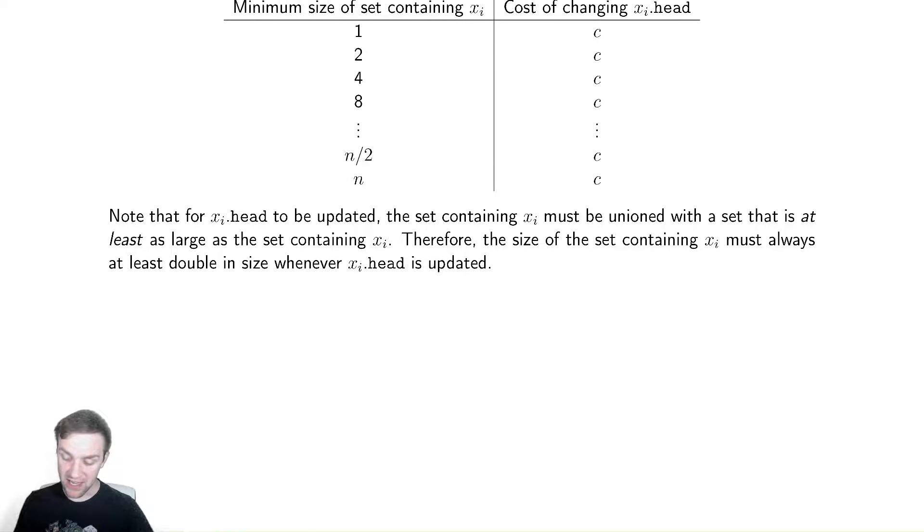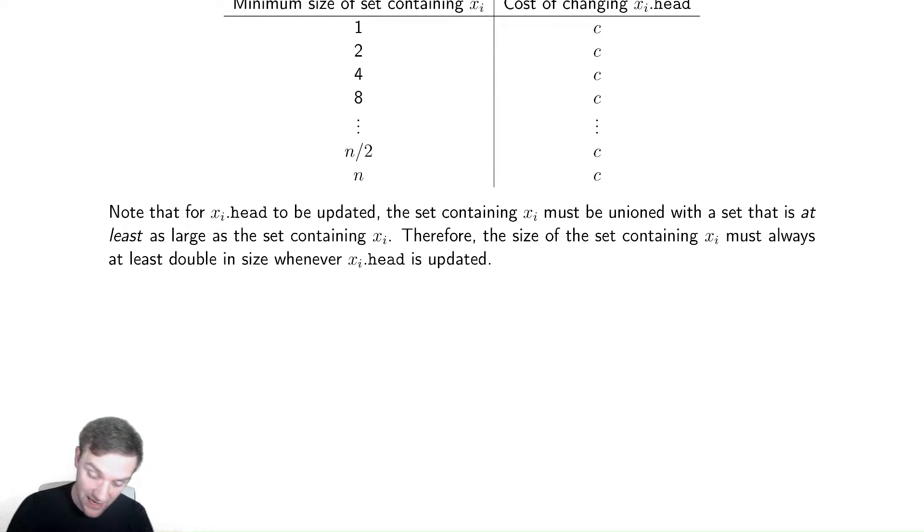Let's analyze the life cycle of xi. Suppose it starts as small as possible. The smallest xi could be is by itself. I would then union it with a set, and if it's going to increase in size, the only way that xi is updated is if it was unioned with a set that is at least as large as it.